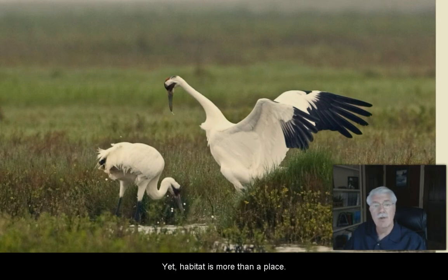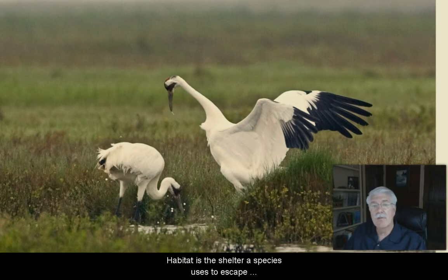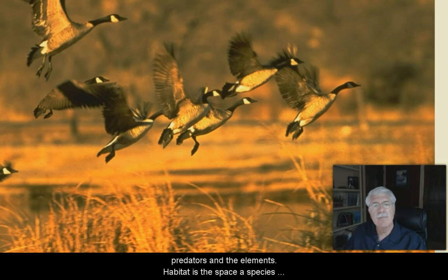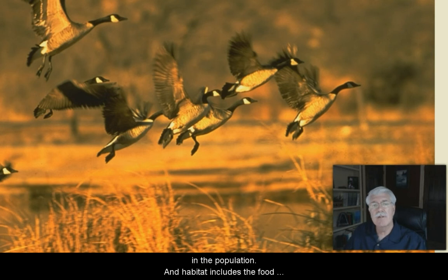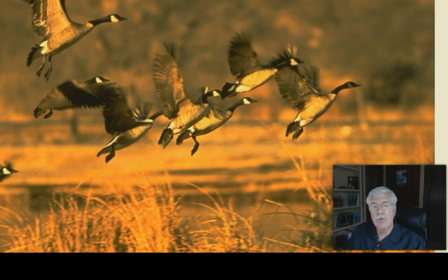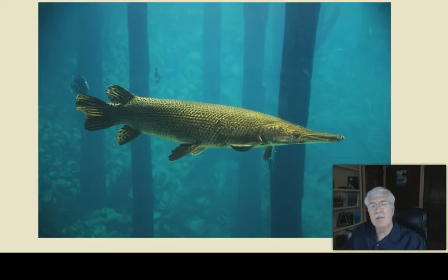The physical environment that a species needs to survive is called habitat. Yet habitat is more than a place. Habitat is the shelter a species uses to escape from predators and ailments. Habitat is the space that a species needs for reproducing and for containing all the individuals in the entire population. Habitat includes the food a species needs for hunting, gathering, or producing. It includes all the things a species needs, and most or all of what it prefers.